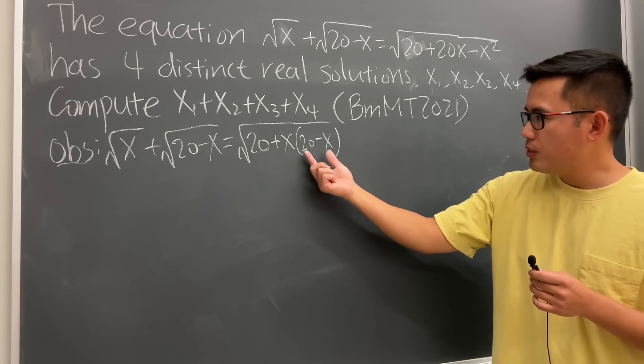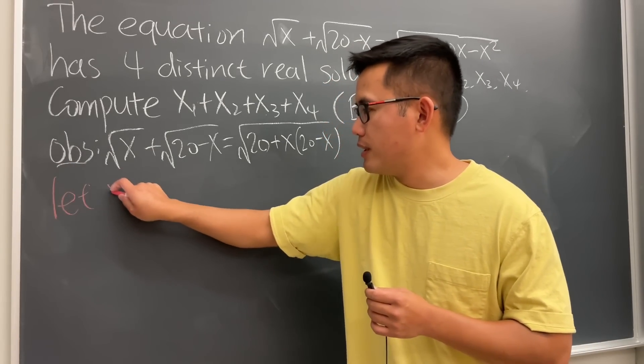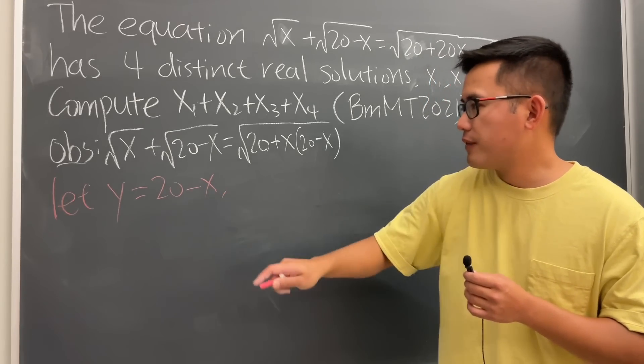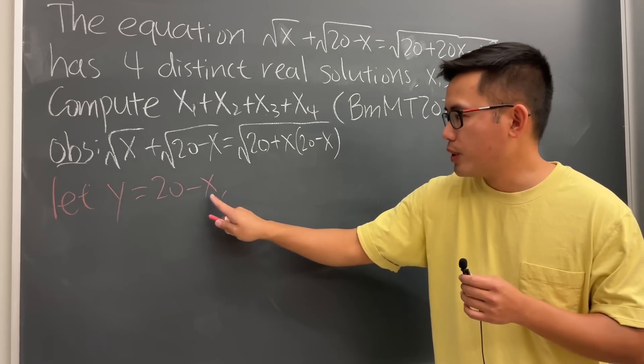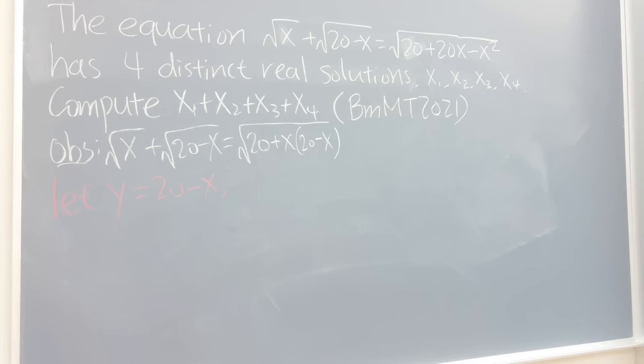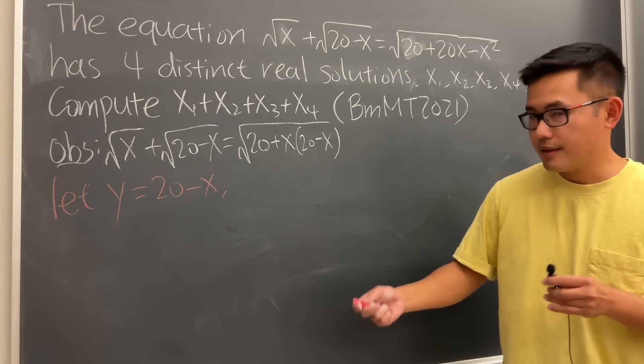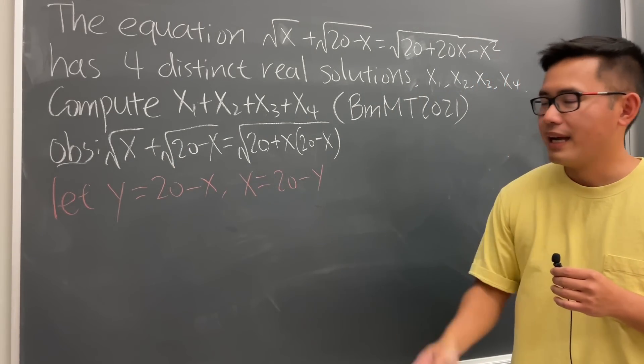So from here, check this out. I'm just going to put 20 minus x to be another variable. I'm just going to use the same notation as I used in this solution. Let y be equal to 20 minus x. And of course, by doing so, we will also have to write the x in terms of y. So we know we can put this there, put that there. So that means x is equal to 20 minus y. And now, here is where the magic happens.